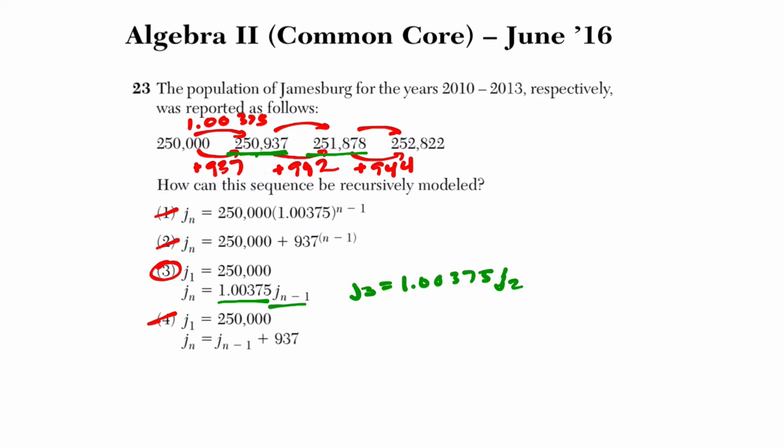Now, to look at another reason why we would reject choice 1 here, this is essentially the same thing, where you start off at 250,000, and if you plug in 1 for n, 1 minus 1 is 0, and this base to the 0 power is just 1, so you get 250,000. And if you plug in 2, you get 2 minus 1 here and 1.00375 to the 2 minus 1 and it's just 1.00375 to the 1st times 250,000. It does get you this term and so on and so forth. But it's not a recursive model.